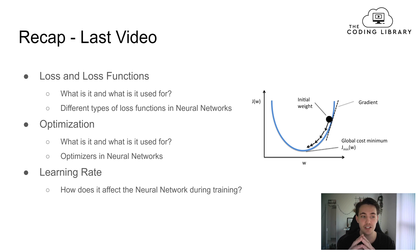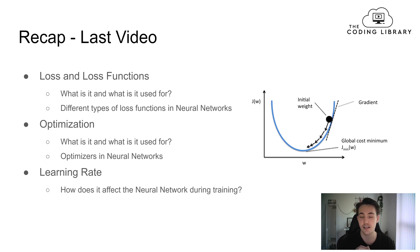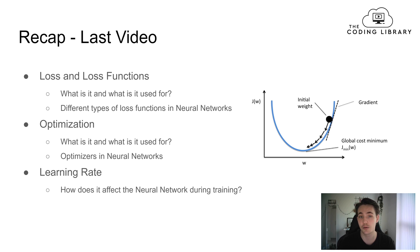First of all, let's have a short recap of what we talked about in the last video. We talked about loss and loss functions — what a loss function is and what it's used for. If those things aren't clear to you, go back and watch the previous video. We also talked about how neural networks train, and some different types of loss functions and optimization in neural networks.